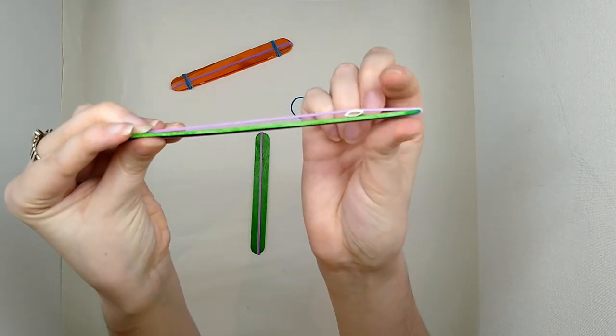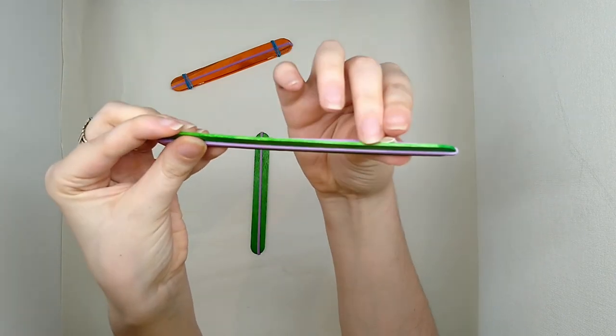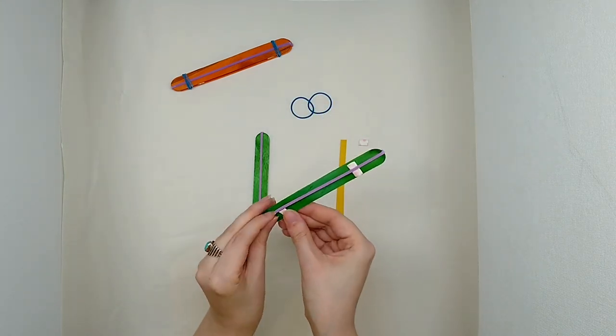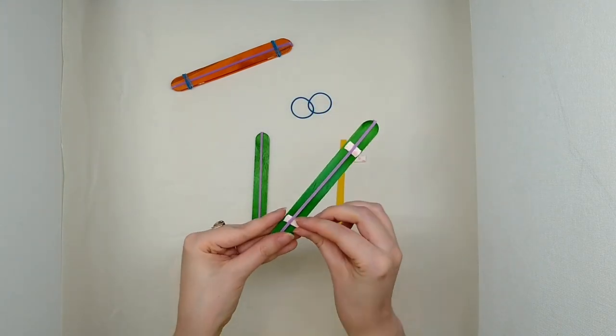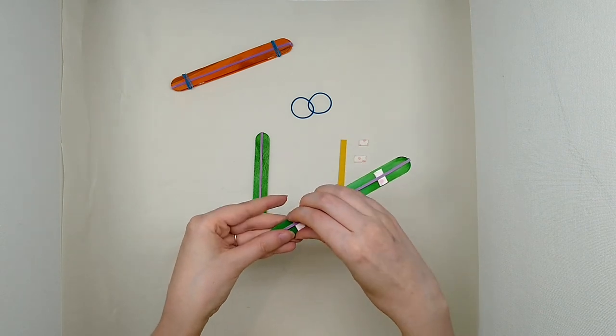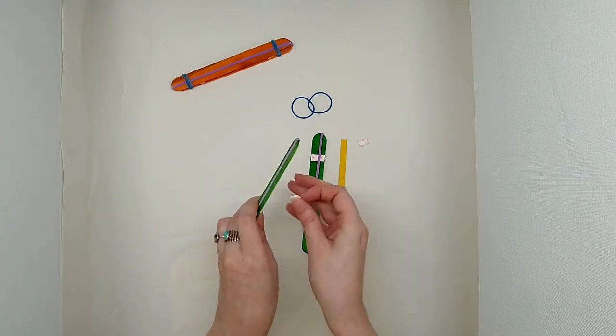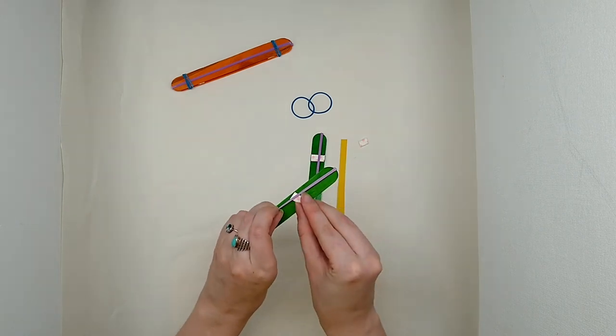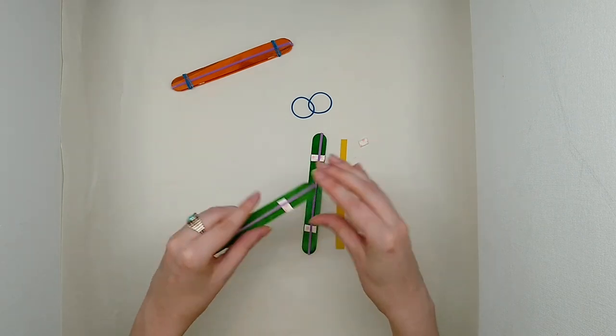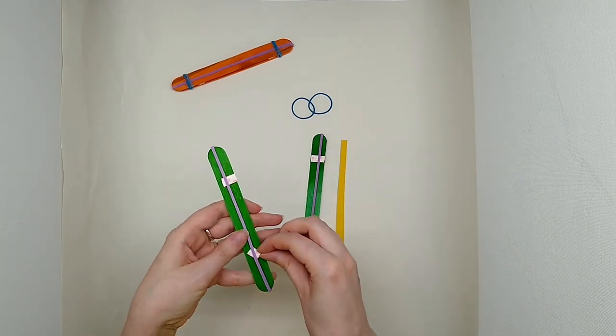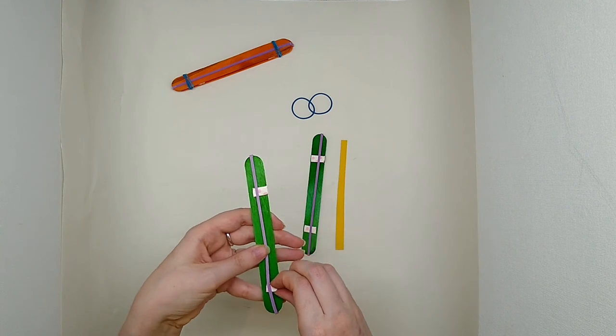Now I'm going to put these pieces of straw like this, not all the way to the end but kind of in the middle. Where you put them will change the pitch of your harmonica, so play around with it and see what pitch you like best. I like it somewhere kind of towards the end but not all the way in the center because that gets a little high pitch.